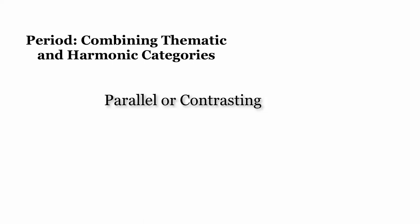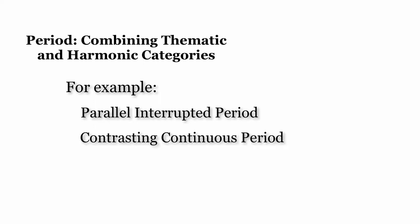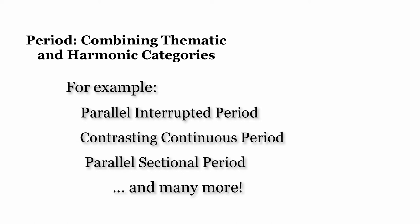The thematic and harmonic categories can be combined to create several different types of periods. Each period type is either parallel or contrasting, and either interrupted, sectional, continuous, or progressive. For example, we can have a parallel interrupted period, a contrasting continuous period, a parallel sectional period, and so on. Let's listen to a few examples.